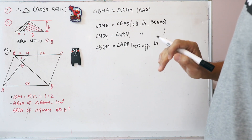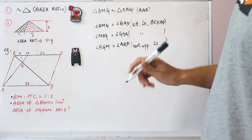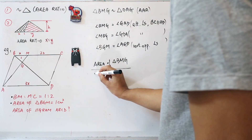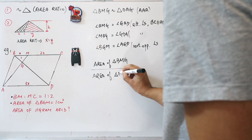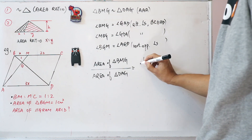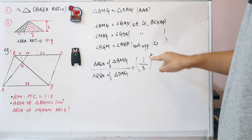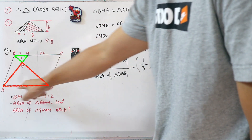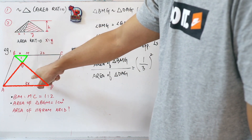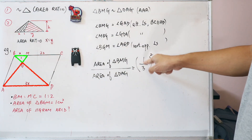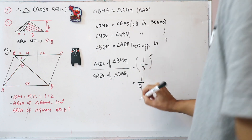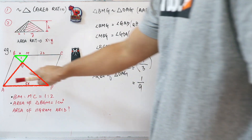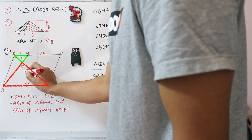After proving the two triangles are similar, we can draw conclusions about the area. The ratio of the area of triangle BMG to triangle DAG equals the square of the length ratio. For triangle BMG the length BM is x, and for triangle DAG the length AD is 3x, so the length ratio is 1 to 3, and the area ratio is 1 over 3 squared, which is 1 to 9. So the area of triangle DAG is 9 times 1, which is 9.